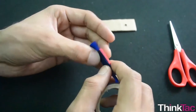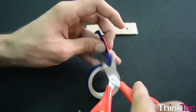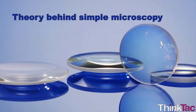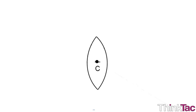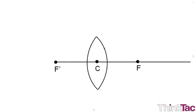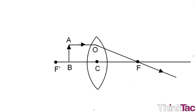Some theory concepts behind simple microscopy: the theoretical concept behind a simple microscope can be explained with the help of the following ray diagram. Consider a biconvex lens with its optical center C and foci F and F prime. When a small object AB is placed next to it at a distance closer to its focal length, that is between C and F prime, a ray of light that originates from point A parallel to the principal axis passes through the lens and gets refracted along the line O-X.